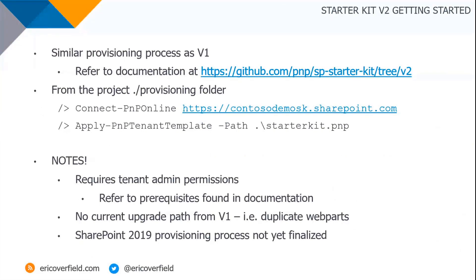Getting started is a very similar process to V1. Go to the GitHub page and, for now, go to that V2 branch. Connect to your site, then from the project provisioning folder, run the Apply-PnPTenantTemplate cmdlet and sit back and wait — it takes about 10 minutes. It's supposed to be that easy and it's worked for us consistently. You still need to be a tenant admin and there are some prerequisites found in the documentation.